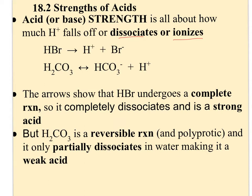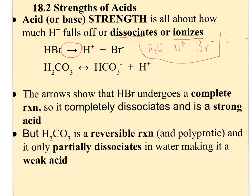Acid-base strength is all about how much H+ falls off. HBr is shown with a single arrow to show it undergoes a complete reaction — it completely dissociates. When you're done, you would have water, H+, and Br- in your container, but no HBr. It would all have fallen apart. There would be no HBr because it's totally dissociated.